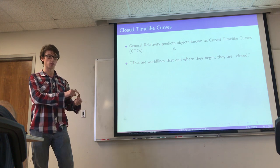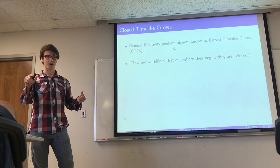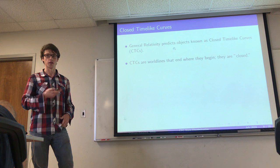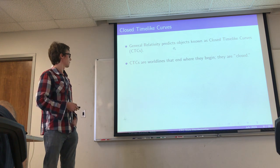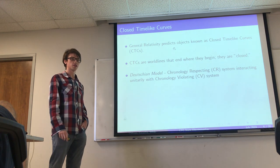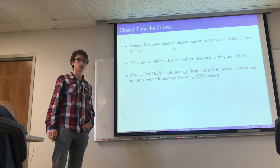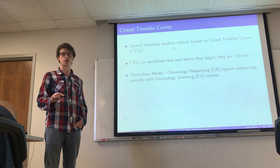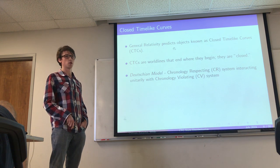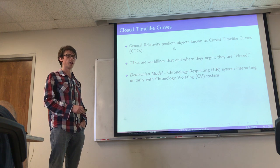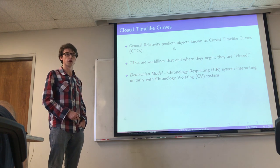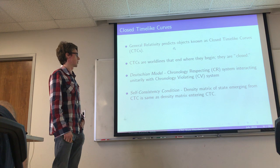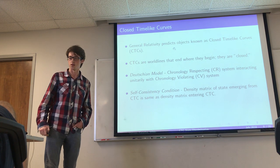You traverse a set of x, y, z, t coordinates when traveling along the world line, and when you come back to the initial point, you have the same x, y, z, t coordinates as where you entered the CTC. The Deutschian model describes quantum mechanics near CTCs: it strips away the general relativistic details and represents a CTC as a unitary interaction between a state obeying normal chronology and a chronology-violating state, imposing a self-consistency condition that the state entering the CTC must be the state that emerges from it.